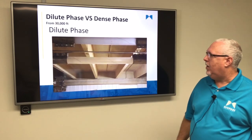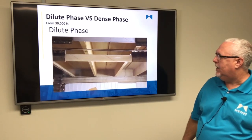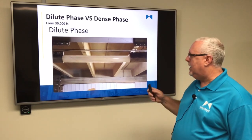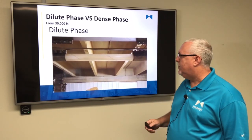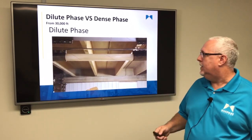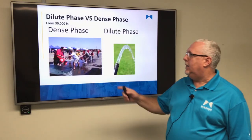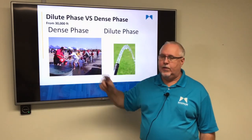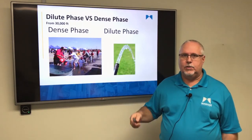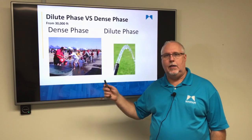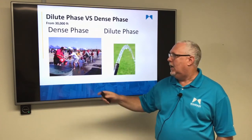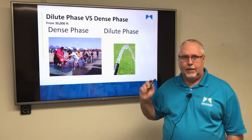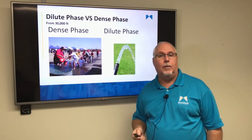Dilute phase systems with the same product in a dilute phase convey line — you can't really see the particles; they're all moving too fast and they're moving consistently. The way I like to look at it is that a dense phase system is kind of like a bucket brigade: you fill up a container, pressurize it, it conveys down the line, you relax, you fill it up again. Dilute phase is more like a garden hose — you turn it on and it starts moving, you turn it off and it stops.